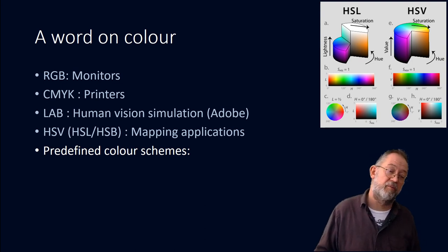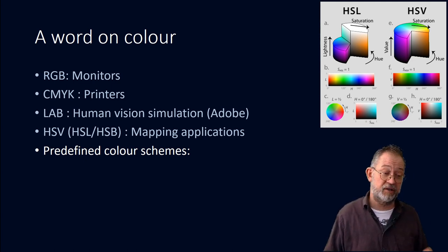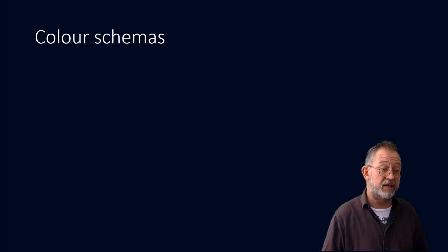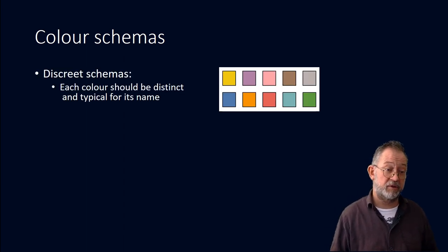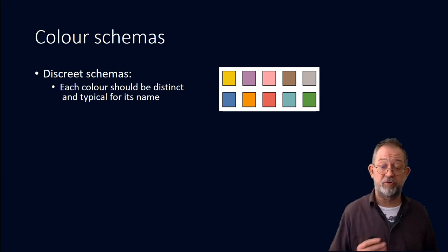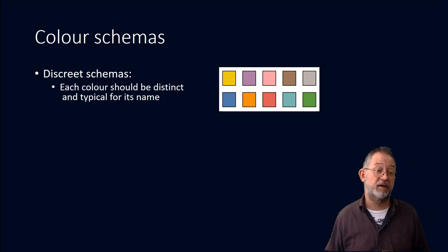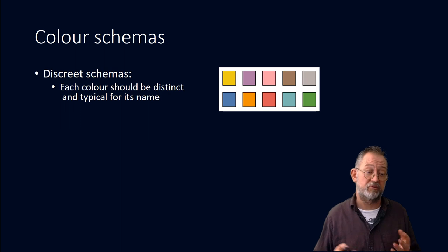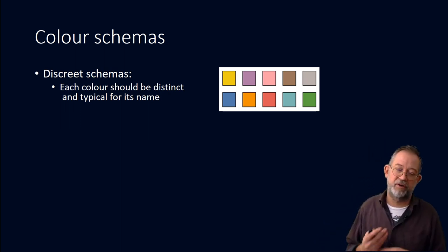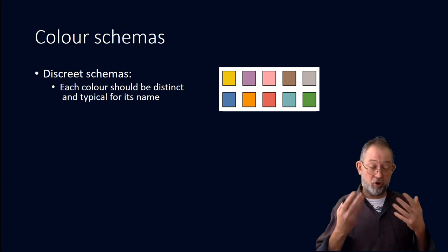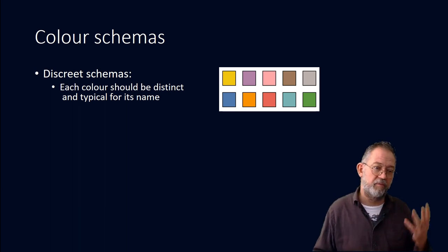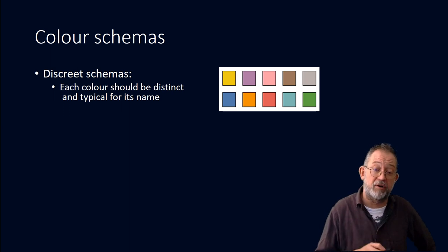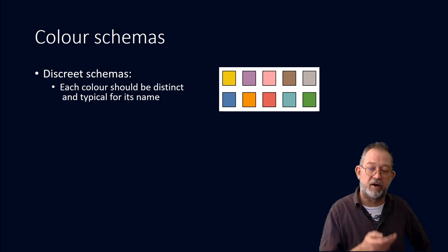Hue, value, and saturation is a good way of working with colors when you want data-driven colors, which is probably why we find it in these types of applications. We can also work with well-defined color schemes rather than defining individual colors. Discrete color schemes provide a series of colors for categories. It's important that colors are typical for their name — pink should look pink — and easy to distinguish, so there's agreement on which color represents which category in a visualization.